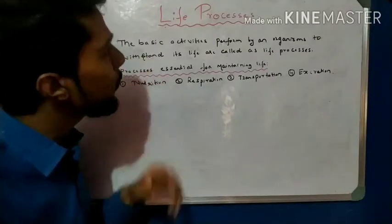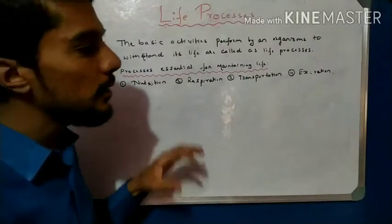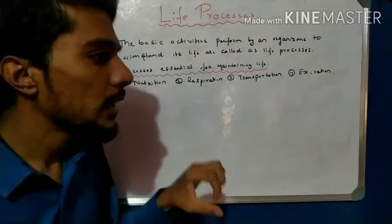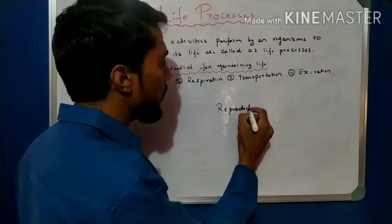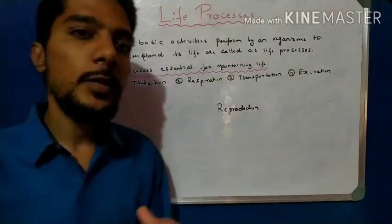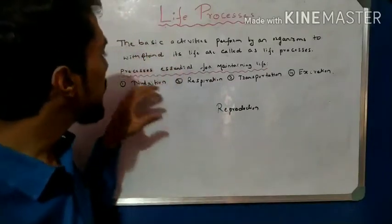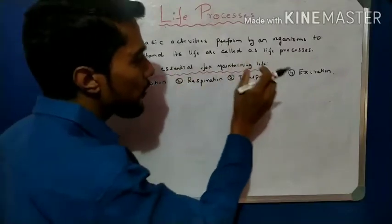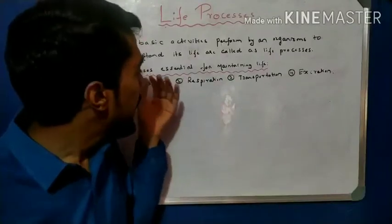In the definition, basic means these are the essential activities. For example, take reproduction — reproduction is not a basic or essential activity. Maybe an organism reproduces or maybe it does not reproduce; the life process is not affected. But the four activities — nutrition, respiration, transportation, and excretion — are essential and important.